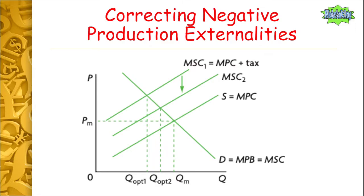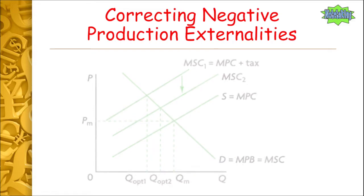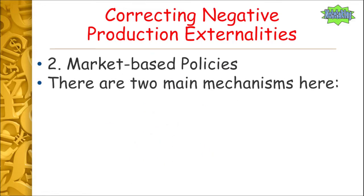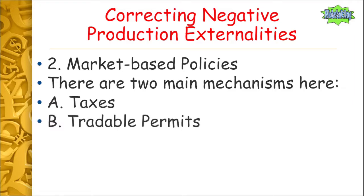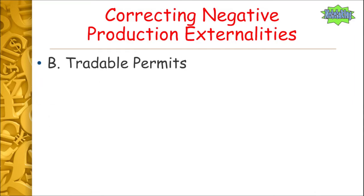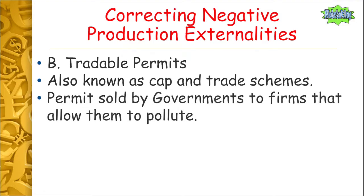As you can see in the diagram, we have our original PM and QM point reflecting free-market operations, and then Q-opt 1 and Q-opt 2 showing what our marginal social cost curve is and what our marginal private cost curve plus the tax added on will be. The second market-based policy — having already looked at taxes — is tradable permits.